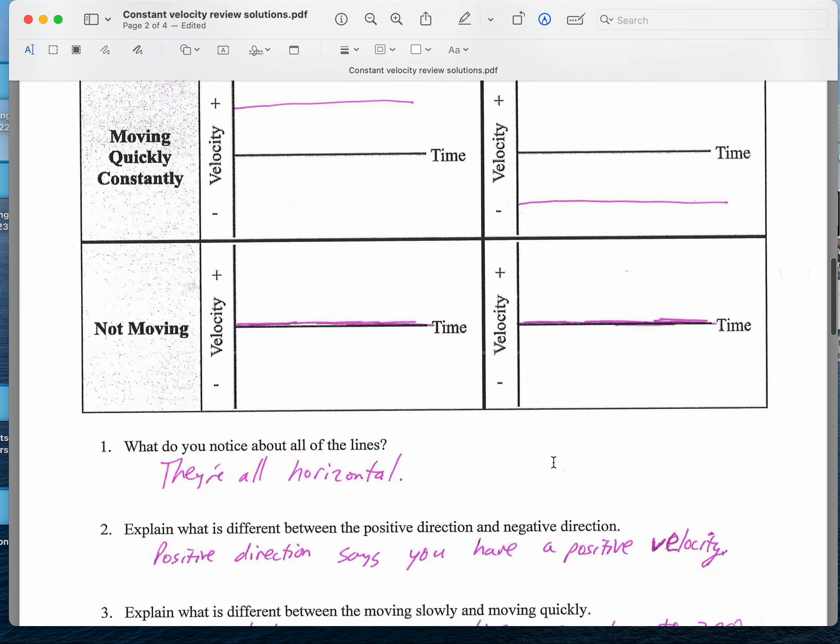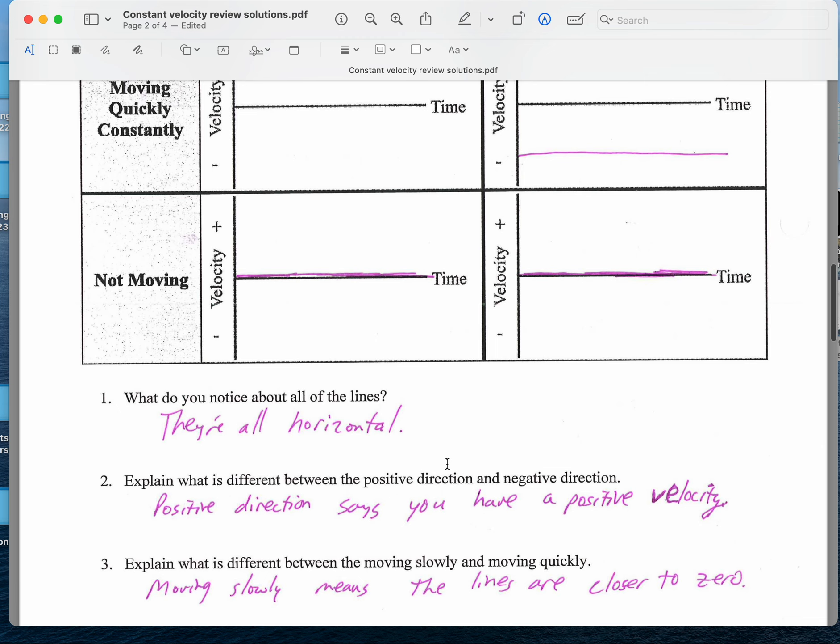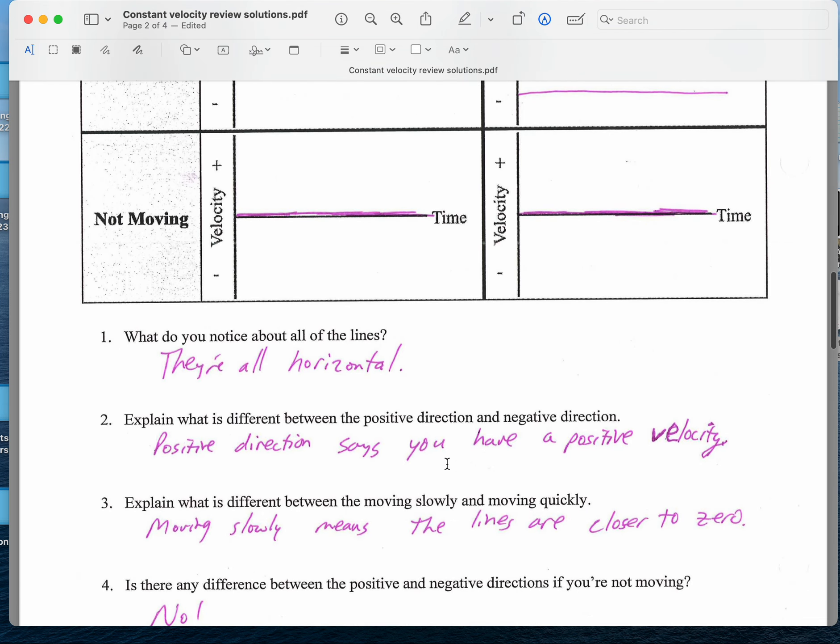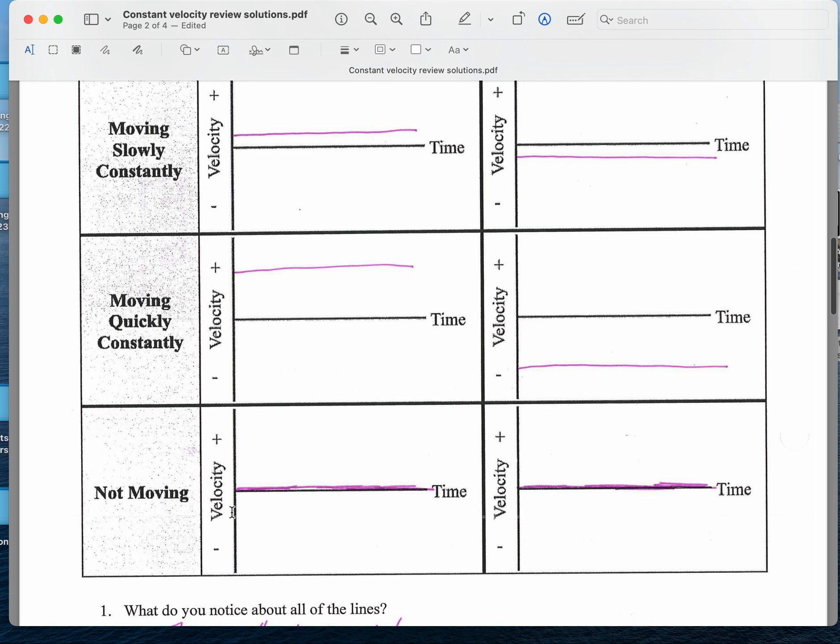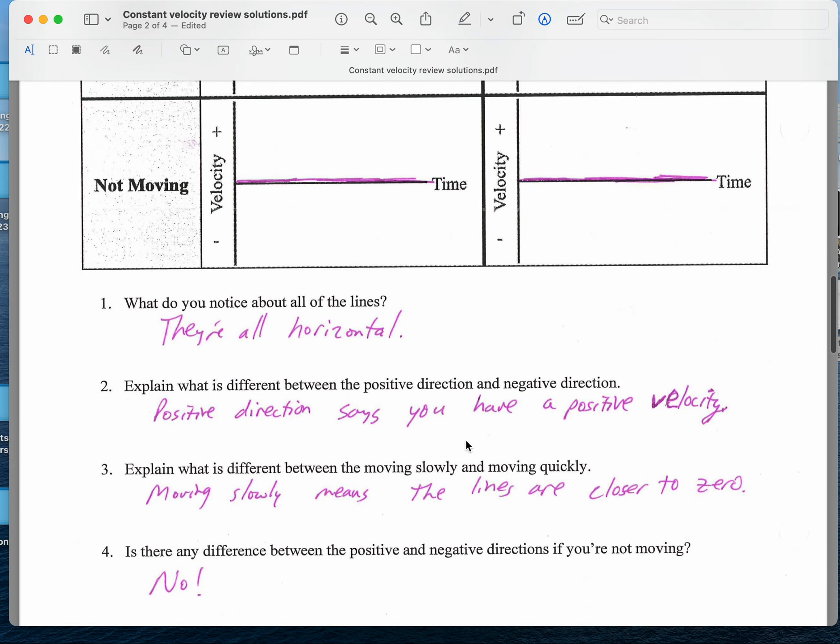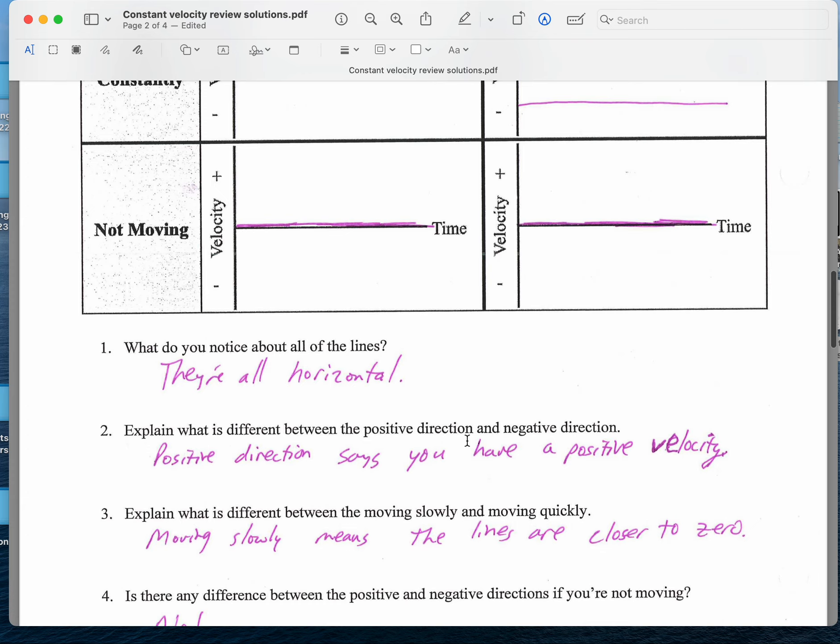So again, all these graphs are horizontal. Positive direction has a positive velocity. Negative direction has a negative velocity. The difference between moving slowly and moving quickly is you're further away from 0 when you're moving quickly as opposed to moving slowly, whether that's in the positive or negative direction. And there's no difference between positive and negative directions if you're not moving because it's 0 meters per second.